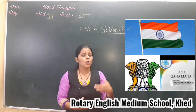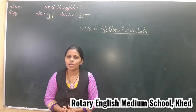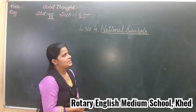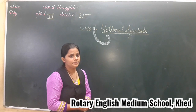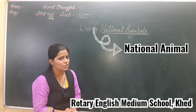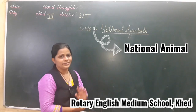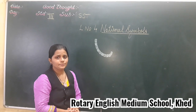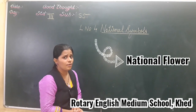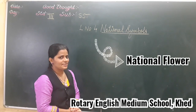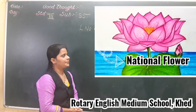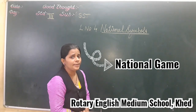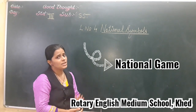Along with these three main symbols, there are other national symbols. That is, National Animal — do you know which is our national animal? Tiger, right! And National Flower — do you know which is our national flower? Lotus. Then the next, National Game — do you know which is our national game? That is hockey.